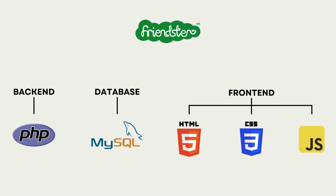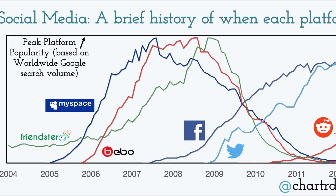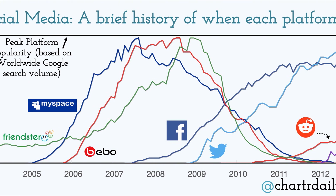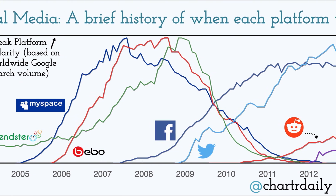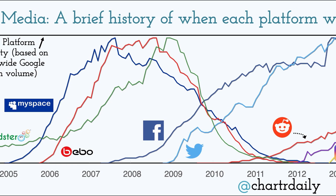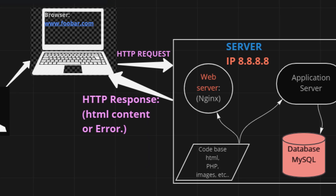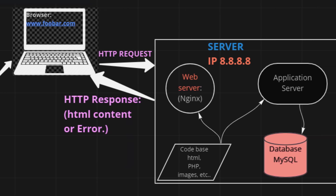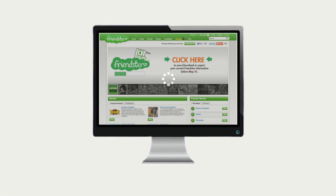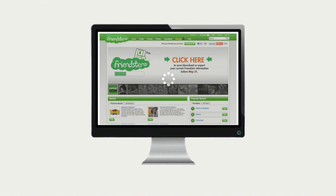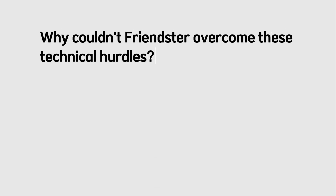As Friendster's popularity soared, reaching over 115 million registered users at its peak, the platform began to encounter significant technical challenges. The existing infrastructure, initially designed for a much smaller user base, struggled to keep up with explosive growth. This led to severe performance issues, with page load times sometimes reaching up to 40 seconds.